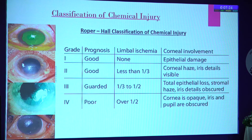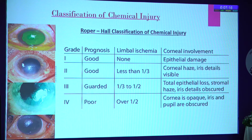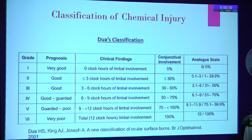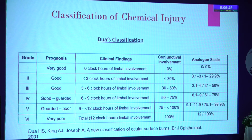This classification was given at a time when there was no facility for limbal stem cell transplantation. Now we know that with limbal stem cell transplantation, even so-called Grade 4 injuries can have a good prognosis. That was precisely the reason for having a revised classification, given by Dhuayatal, which is still the most widely accepted classification of chemical injury. They took Grade 4 of Roper Hall and divided it into Grades 4, 5, and 6.